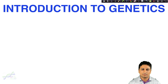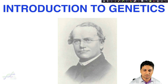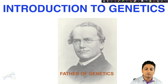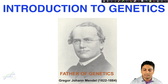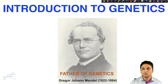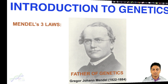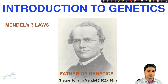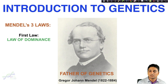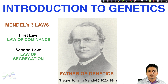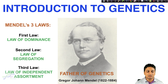Before starting any topic in genetics, I want to talk about a person — Gregor John Mendel. He is also called the father of genetics, and he lived from 1822 to 1884, more than 200 years ago. He is called the father of genetics because he gave us three different laws: the law of dominance, the law of segregation, and the law of independent assortment.